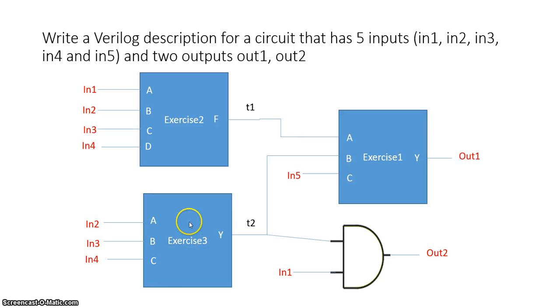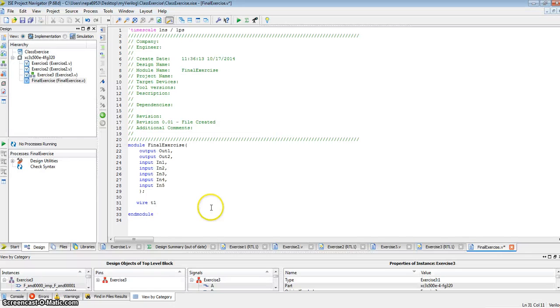Let's take a look at exercise three. It has three inputs, in2, in3, and in4. And its output is called t2. So that's another internal signal called t2. So let's describe that also as a wire. So we're done describing all internal signals as wires.